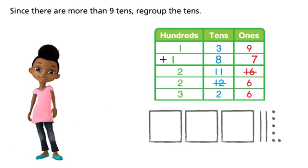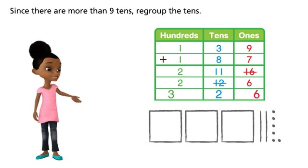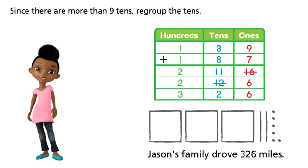139 plus 187 equals 326. Jason's family drove 326 miles.